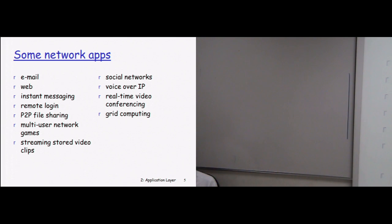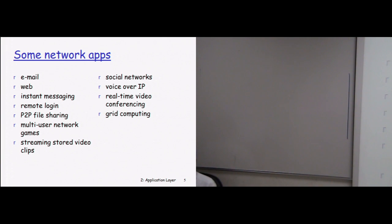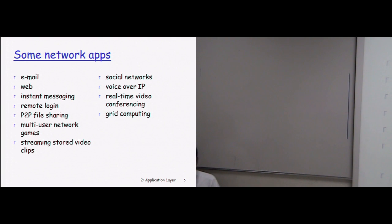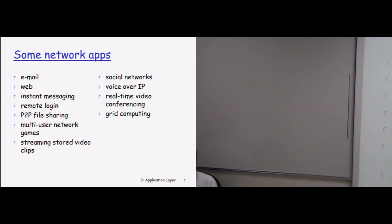Multiplayer games are played not just on the same network but on the WAN and internet — PS3 and PS4 are famous examples by Sony. Players register in a community with a login and password, and if both have the same game they can play with each other. Streaming stored video clips: YouTube is a good example where clips are stored on the YouTube server and you can stream them. Social network websites include Twitter, Facebook, and others.